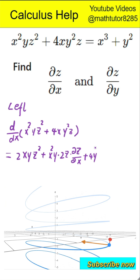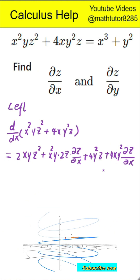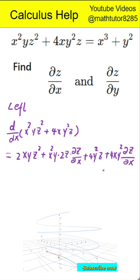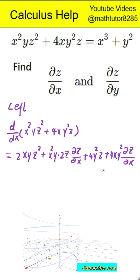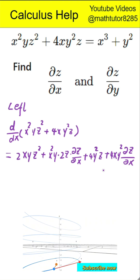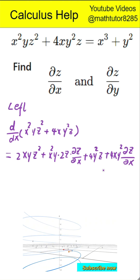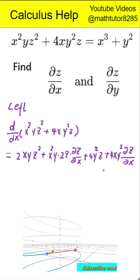Let's break down the left-hand side. The derivative of x squared times y times z squared with respect to x gives: two times x times y times z squared plus x squared times y times two times z times the partial derivative of z with respect to x. The derivative of four times x times y squared times z with respect to x gives: four times y squared times z plus four times x times y squared times the partial derivative of z with respect to x.